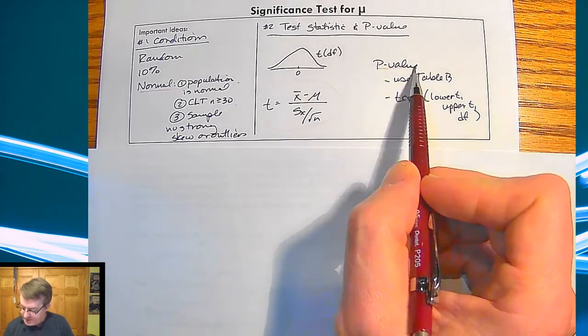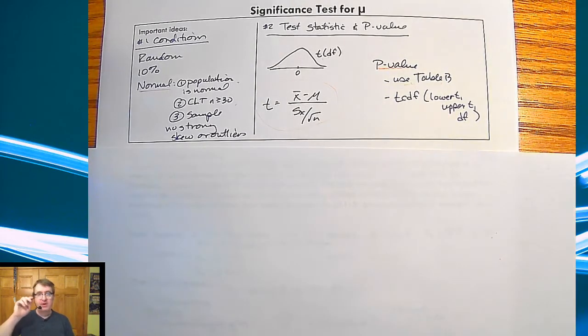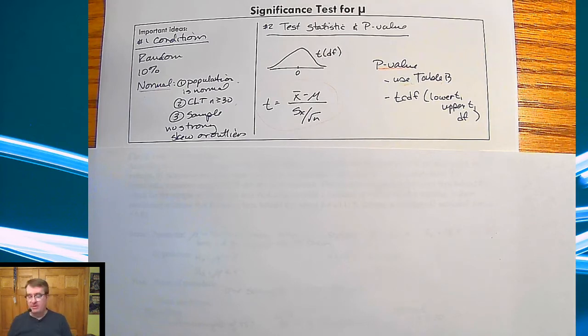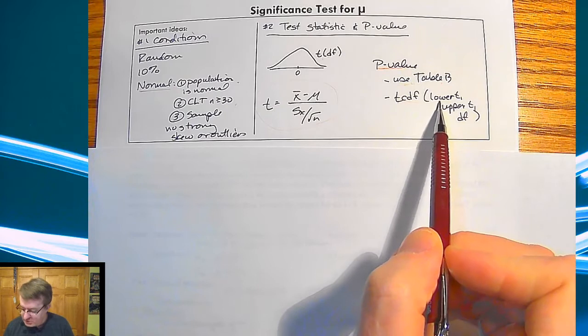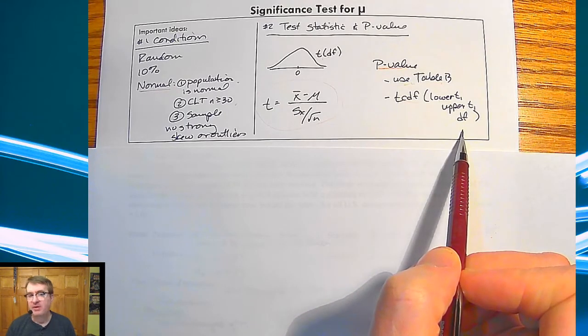And then up here for your p-value, you can either use table B. And again, remember it tells you you're going to be looking in how many degrees of freedom you have, et cetera. And then or you can use TCDF, which is you're going to use your lower T value, your upper T value, and then how many degrees of freedom that you have.